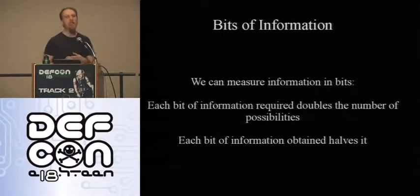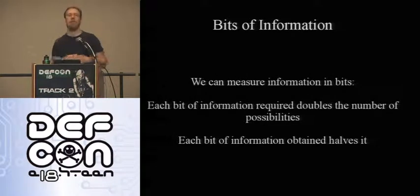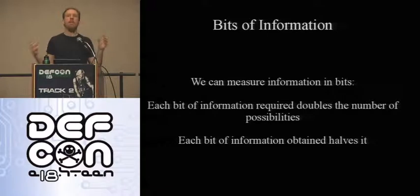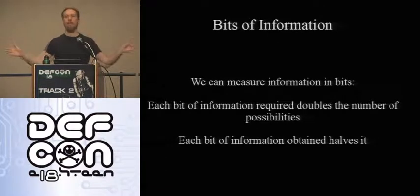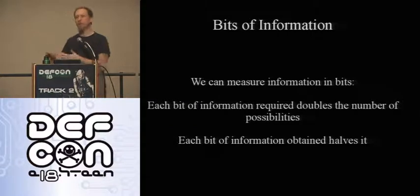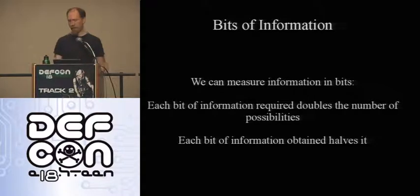There's a mathematical measure for how identifying a set of facts about a person is, or how much information is required to identify someone. If you need more bits to identify them, each bit doubles the number of possibilities. And if you're learning more facts, each bit you learn halves the number of possibilities. You can think of these as trading off against one another.